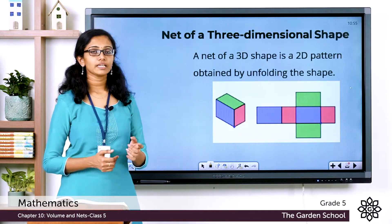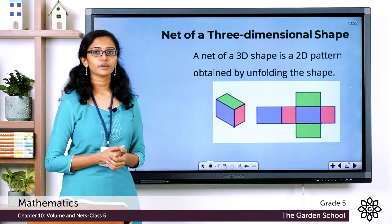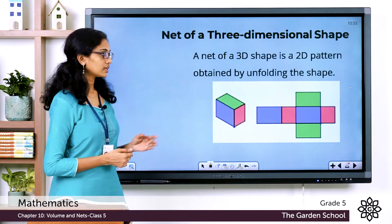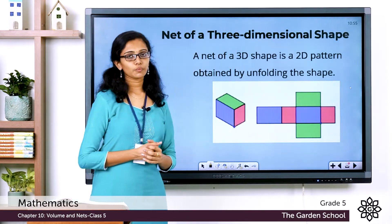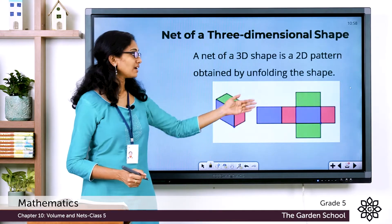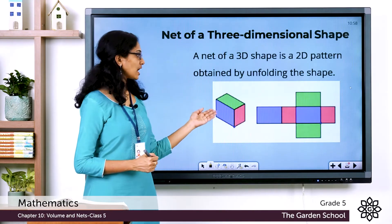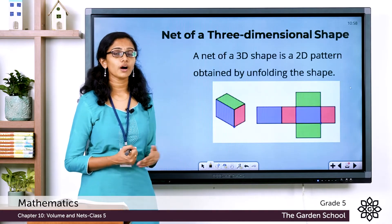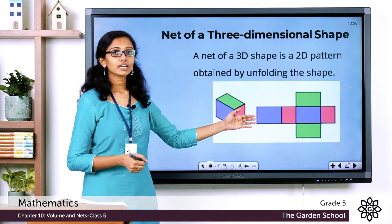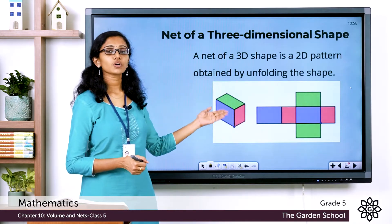A net of a 3D shape is a 2D pattern obtained by unfolding the shape. Here you can see the net of a cuboid. You can see the cuboid is a 3D solid shape whereas the net is a 2D or two-dimensional pattern. How many faces are there for a cuboid? It has got six faces. So in the net, the number and shape of the faces match that of the solid shape.